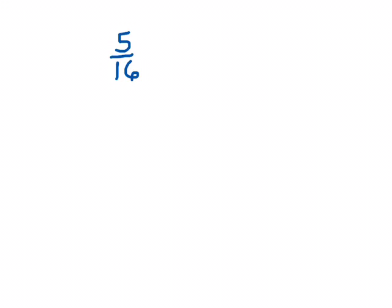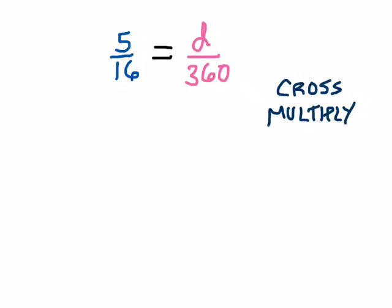So, just like before, I'm going to start with my 5 sixteenths as one of my fractions. A proportion is a fraction equals another fraction. So, 5 sixteenths equals another fraction. In this case, again, just like last time, I want to know how many degrees out of 360 that 5 sixteenths should be. So, what is 5 sixteenths of a circle? How many degrees out of 360 should that be represented by? Just like before, too, I'm ready to cross-multiply now. I've got my fraction equals my fraction, and it's time to multiply across to solve this proportion. So, d times 16 is 16d, and 5 times 360 is 1800.